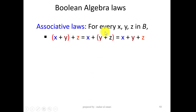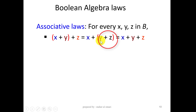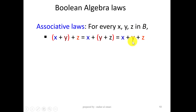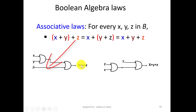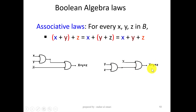There is the associative law. For every X, Y, and Z in the set B, X OR Y OR Z is the same as X OR (Y OR Z), which is the same as leaving the parentheses out: X OR Y OR Z. Circuit-wise, this OR gate takes two inputs and the output is ORed with Z to get X OR Y OR Z. It is the same as having a three-input OR gate with X, Y, and Z. These circuits are equivalent.